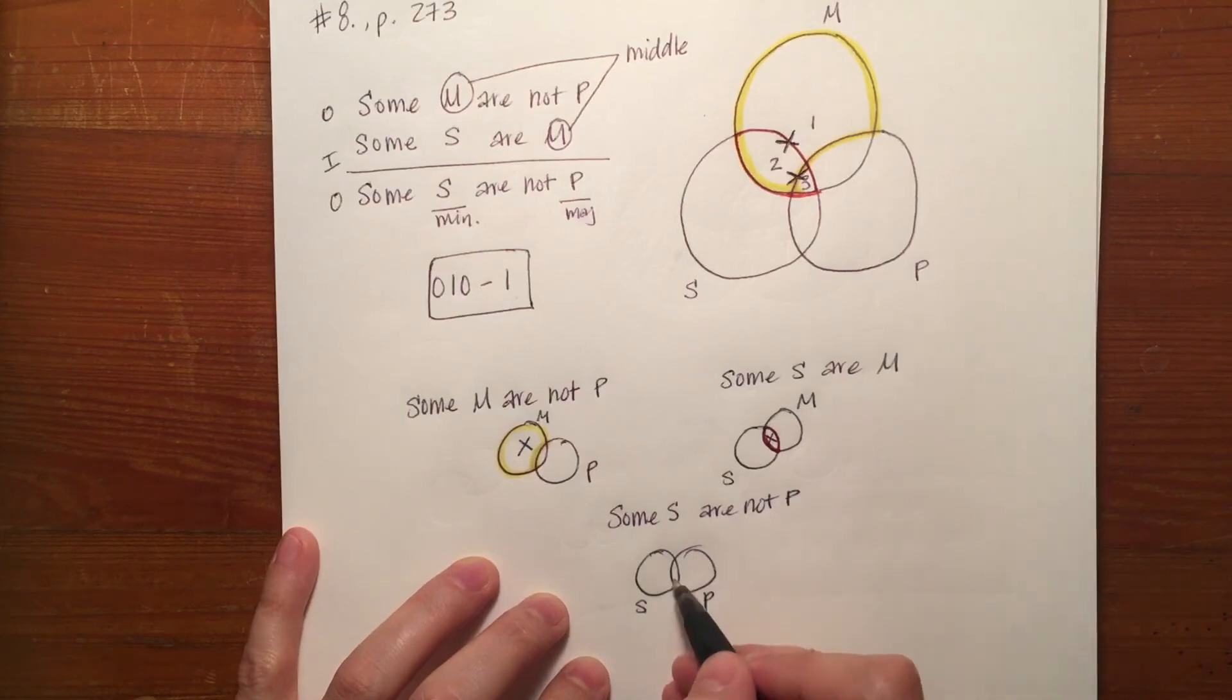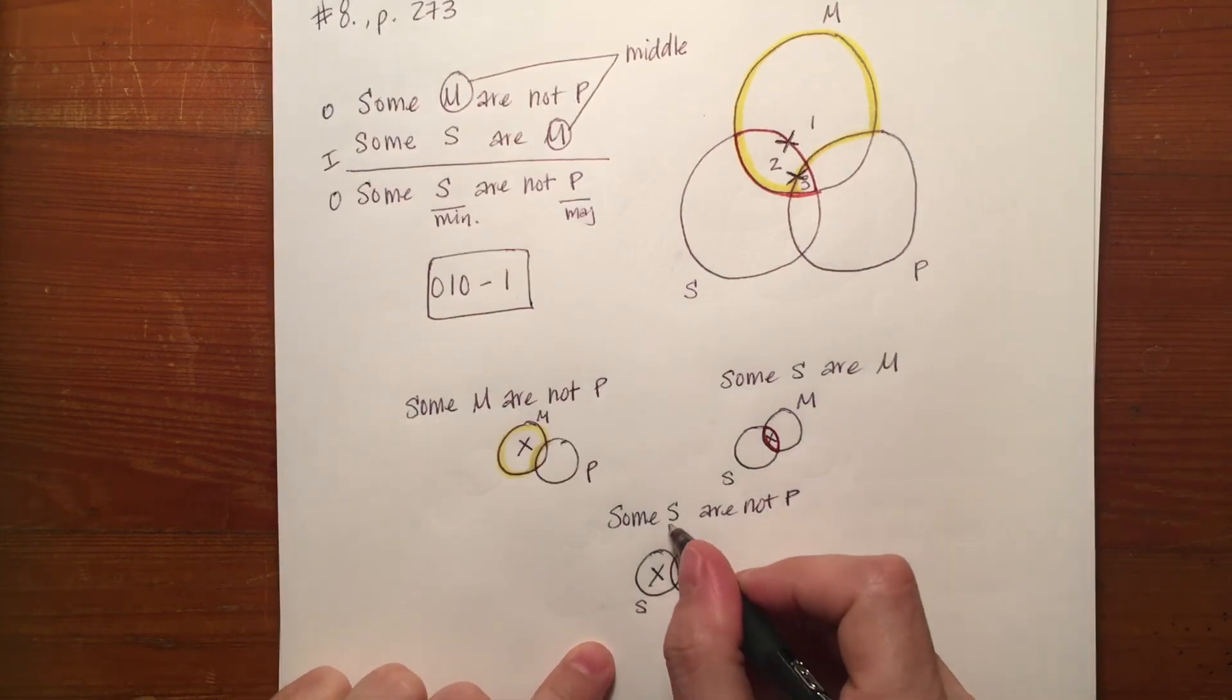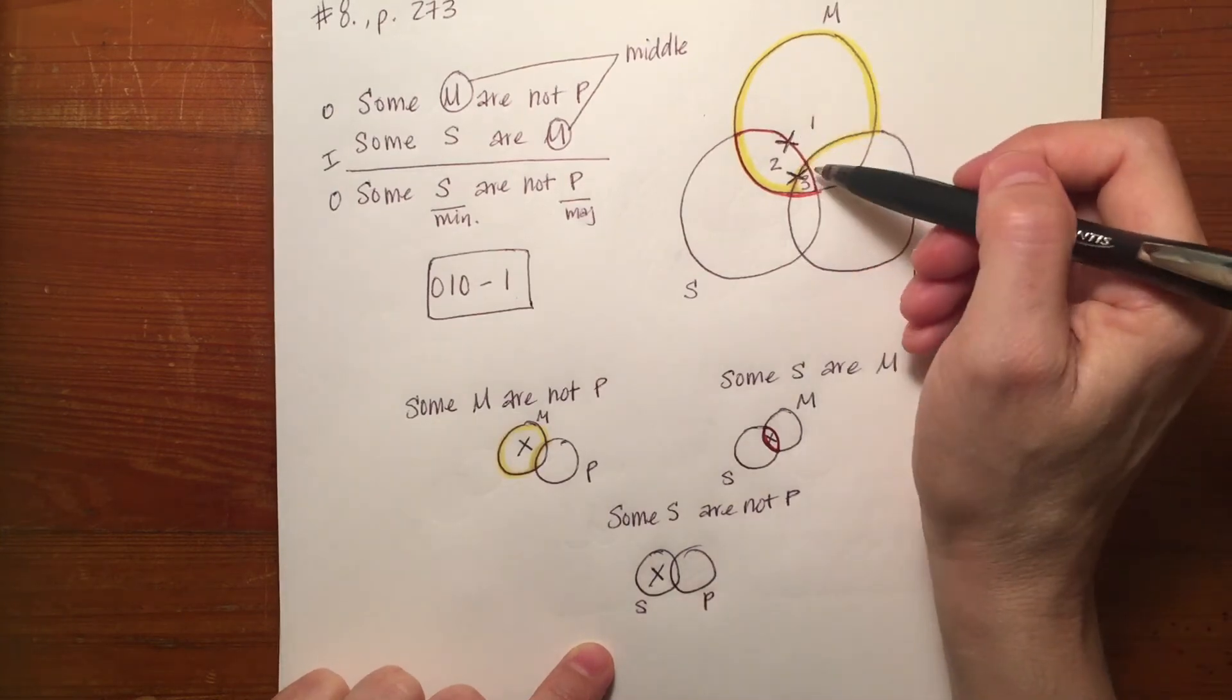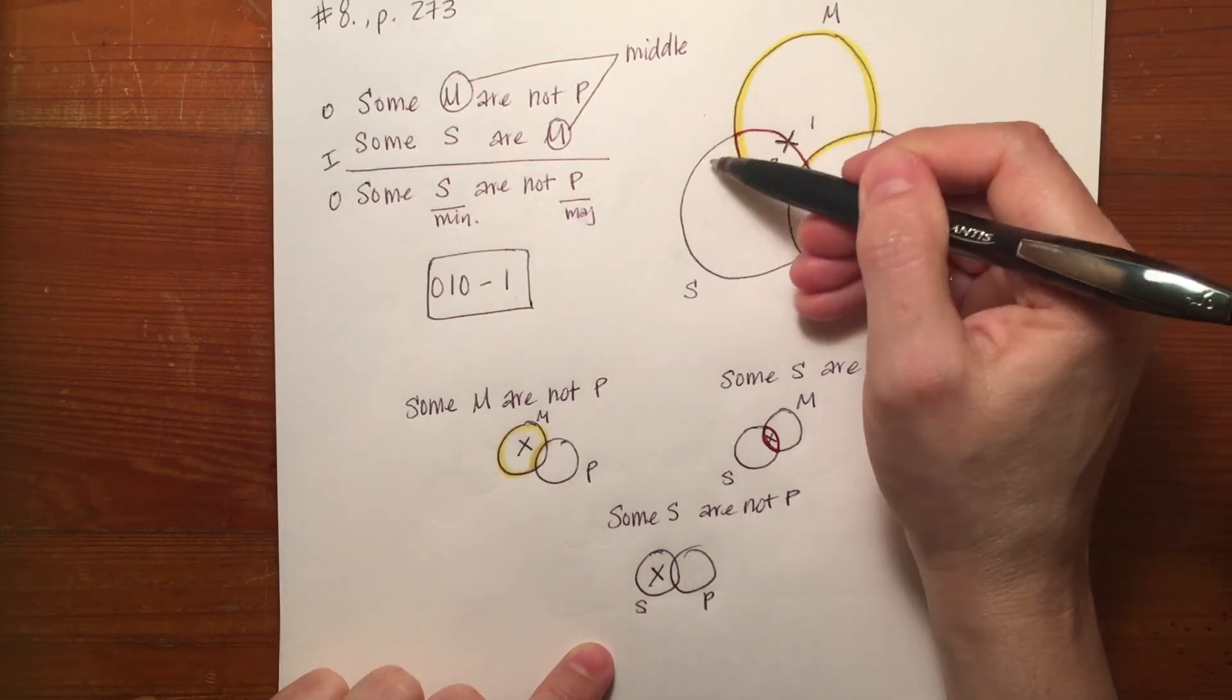here's S and here's P. You can take a look at those. If some S are not P, that means the X would go in the larger part of S that doesn't overlap with the P circle to show that there's at least one S that's not overlapping with P. So is that contained in this diagram?